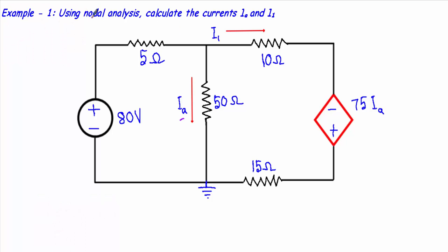In this video I will show you a nodal analysis circuit with a dependent source. Example 1: using nodal analysis, calculate the currents Ia and I1. Ia is the current flowing through this 50 ohm resistor, and I1 is the current flowing through this branch, from this point to this point.